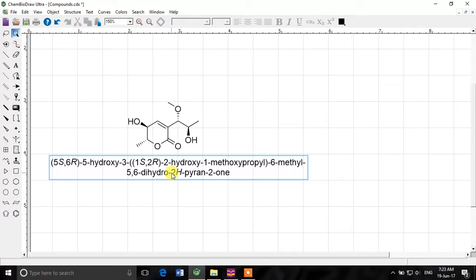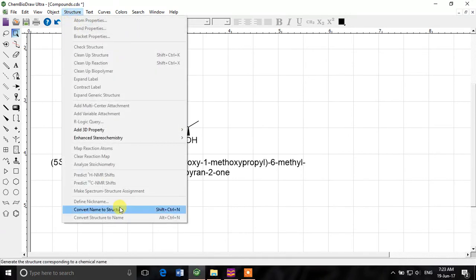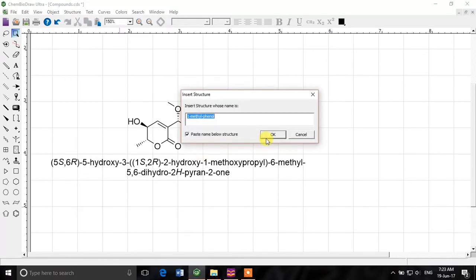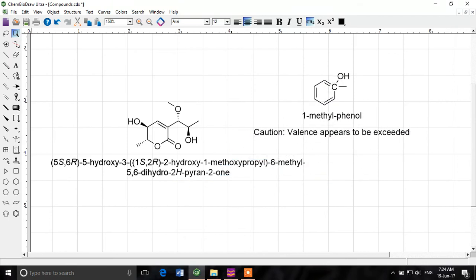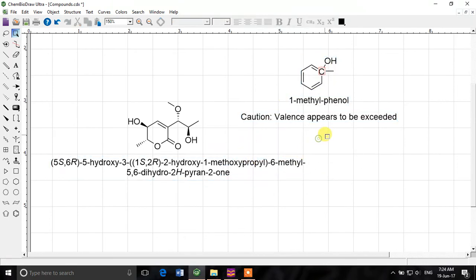Similarly if we want a structure, a name to be converted to structure we can go to structure convert name to structure. And right here for example we'll go with one methylphenol. Let's see how it goes. If we print it, what is it saying?